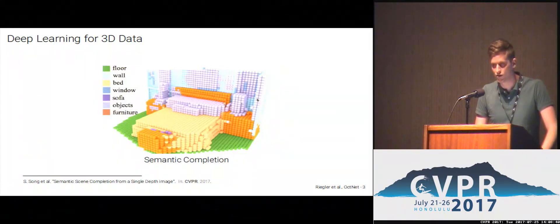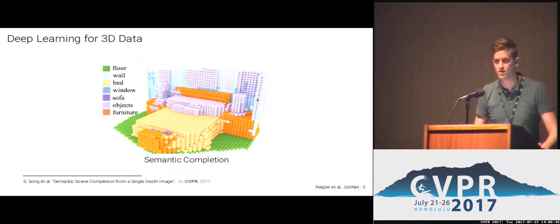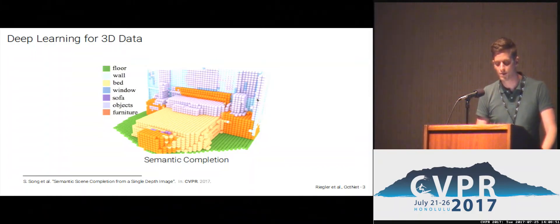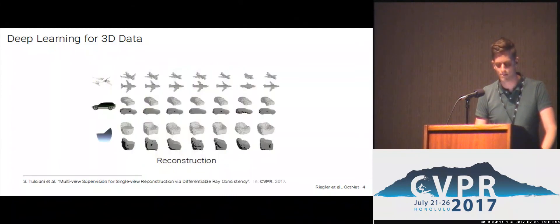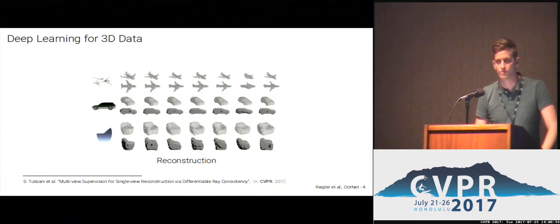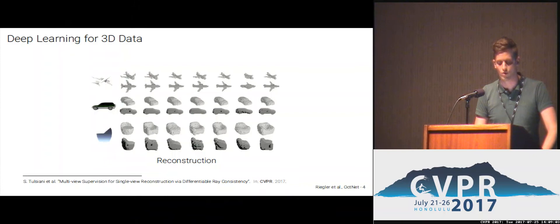Another application presented at this CVPR is semantic scene completion, where the input is a single depth map and the goal is to estimate for each voxel in the scene its occupancy and also its semantic class. Finally, more traditional computer vision problems are now tackled with deep learning, like 3D reconstruction or depth fusion.